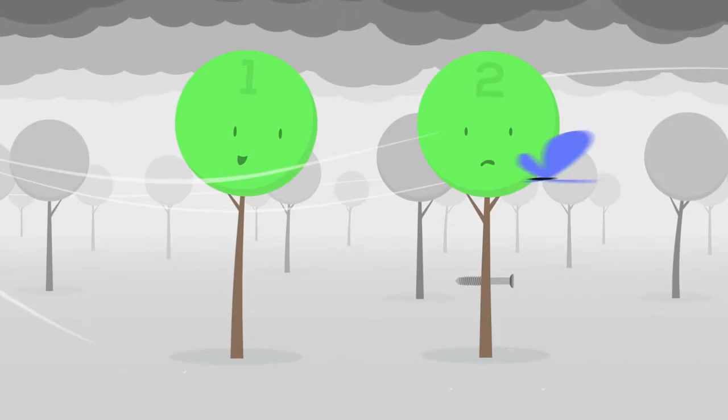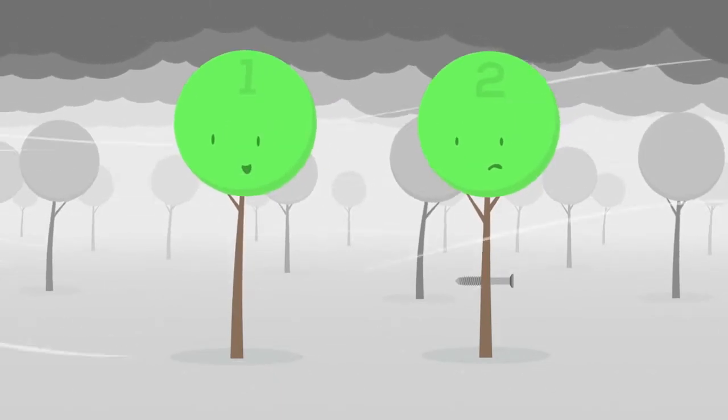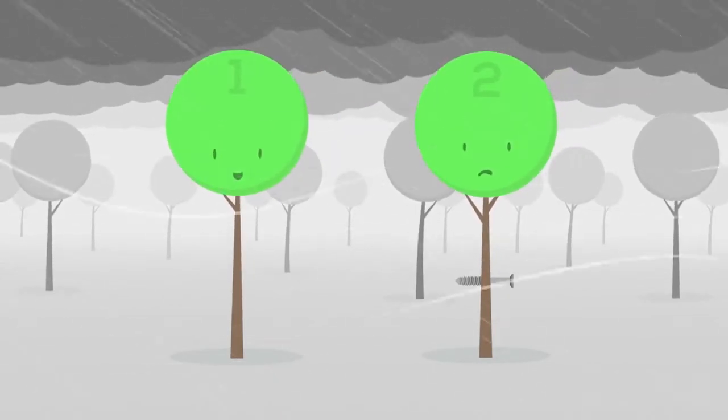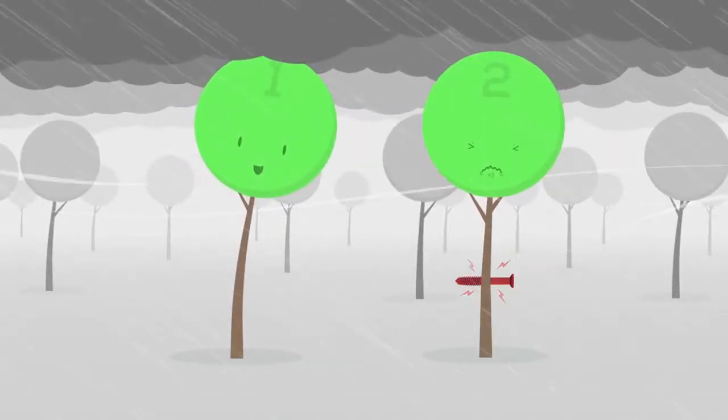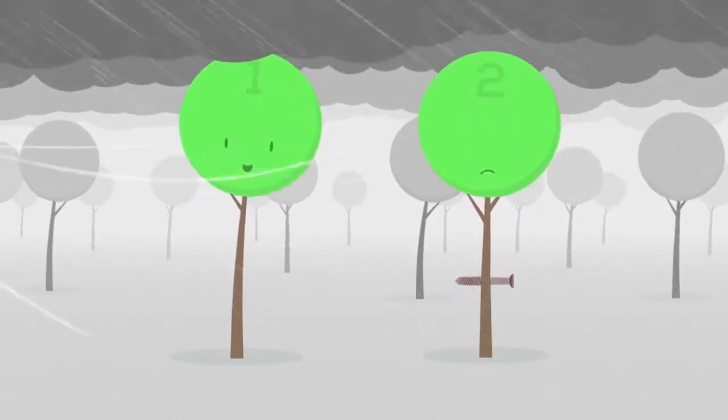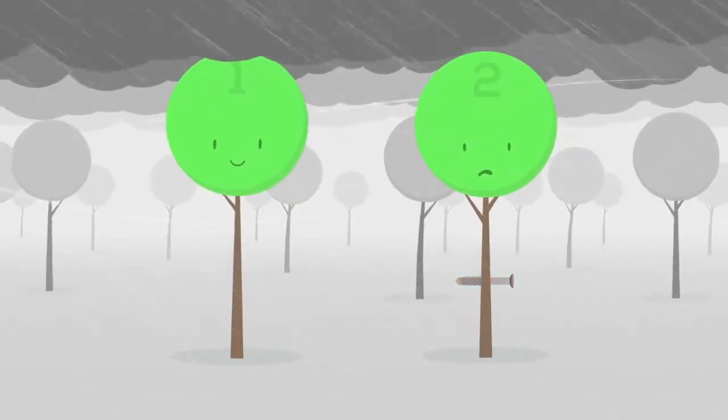Notice how when exposed to extreme weather conditions, these two trees react very differently. Tree number one is bending without stress because of the trunk's natural ability to flex and bend. This actually makes it much stronger.